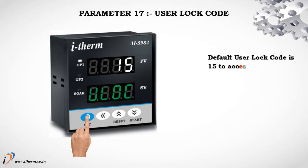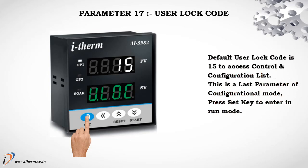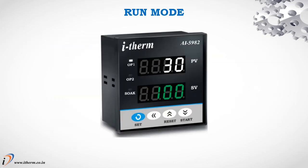Parameter 17: User Lock Code. Default User Lock Code is 15 to access the Control and Configuration List. This is the last parameter of Configuration Mode. Press Set to enter Run Mode.